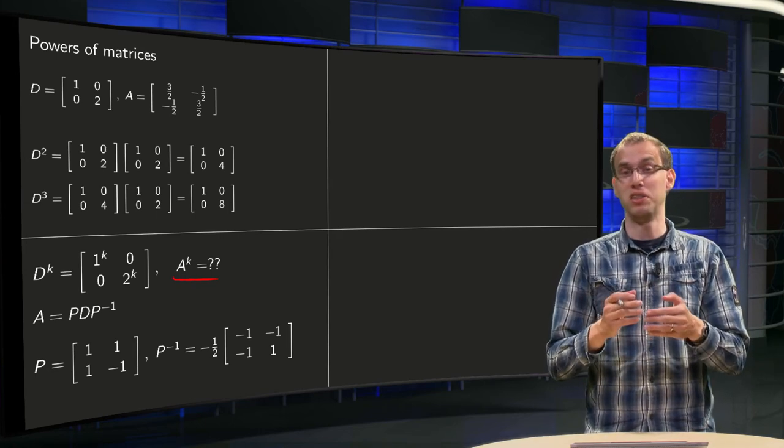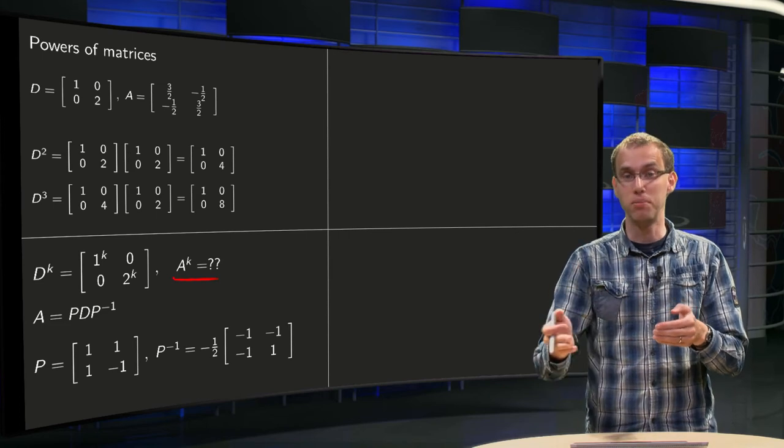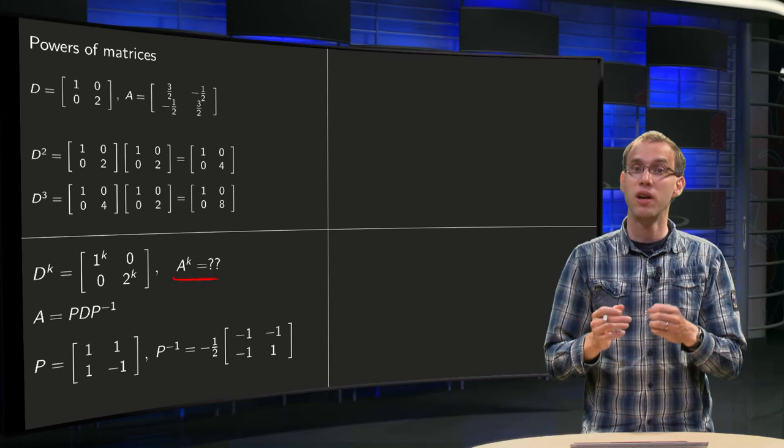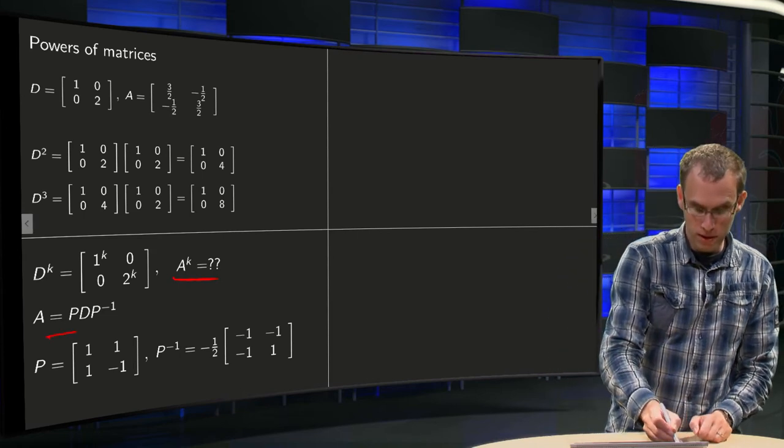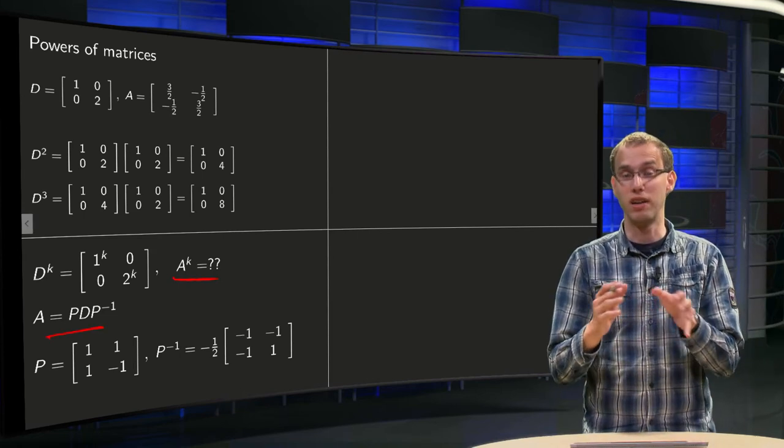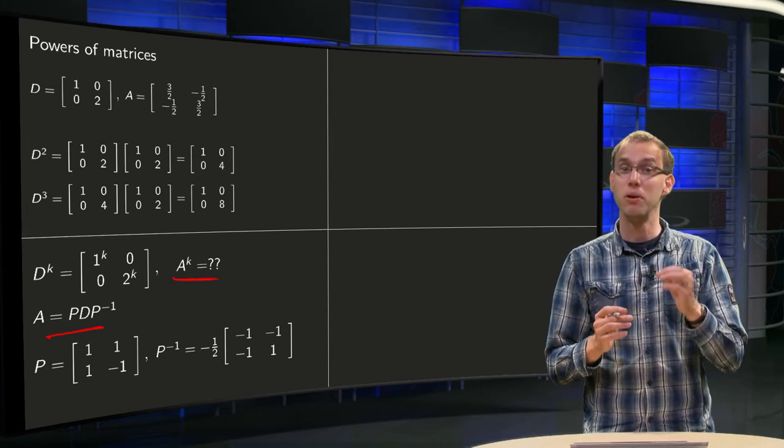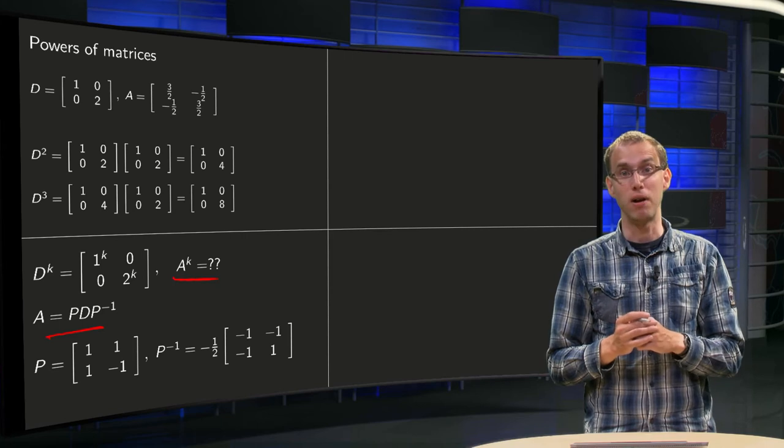In general, you just have to compute A, and A times A, and A times A times A, that's a lot of products. Unfortunately, if A equals PDP inverse, so if A is not diagonal itself, but if A is similar to a diagonal matrix, you can still compute the higher powers of A easily.